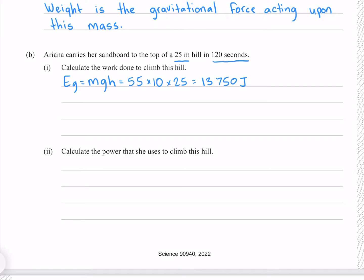Calculate the power that she uses to climb this hill. Power is just our work divided by the time, where our work is our 13,750 and our time is our 120 seconds, which gives me 114.58 watts.